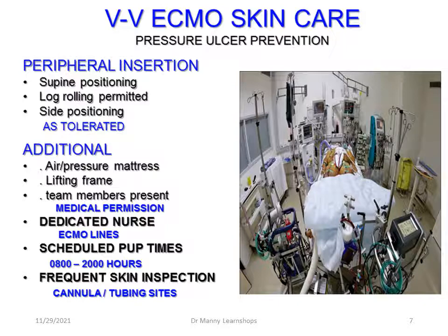Pressure ulcer prevention is typically achieved with supine positioning, log rolling, and side positioning as tolerated with a physician present. Additional aids such as air pressure mattresses and lifting frames can be used. There should be a dedicated nurse for the ECMO lines and a separate dedicated nurse for other critical care. Scheduled pressure ulcer prevention times should occur when full staff are present, typically at 8 o'clock — not at 2am. Frequent skin inspection is recommended at cannula and tubing sites.